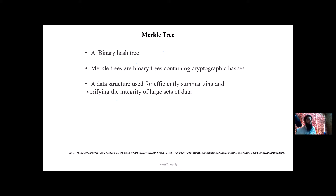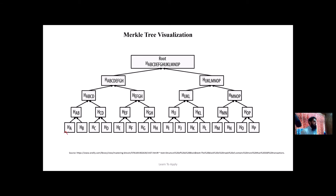Imagine that we have 16 transactions — transaction A, transaction B, transaction C, and so on up to transaction P. We take the SHA-256 hash of each transaction: this is represented by H of A, H of B, H of C, and so on for every transaction. These hash values are the leaves of the tree.